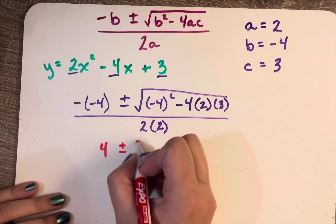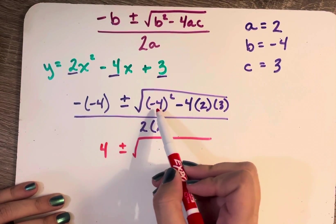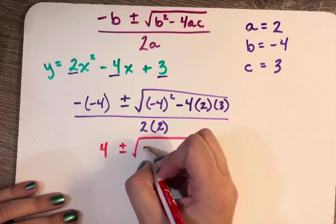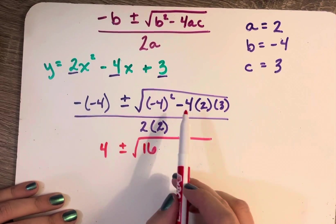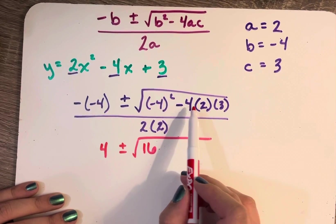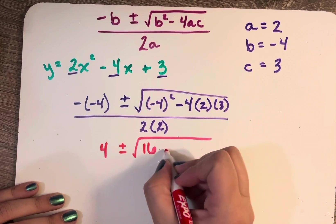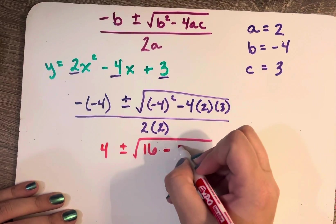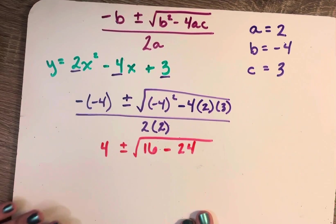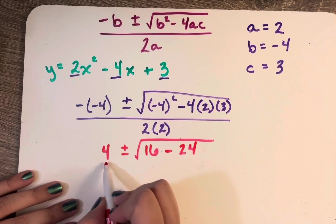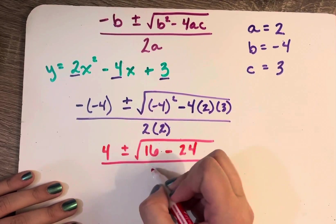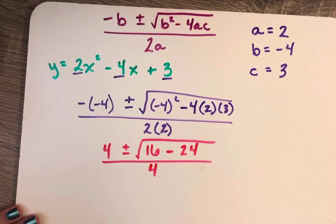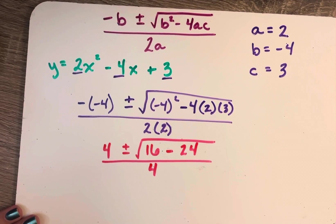This minus negative 4 is going to become a positive 4, plus or minus. Now negative 4 squared is 16, and then minus 4 times 2 times 3. So 4 times 2 is 8, 8 times 3 is 24. And all of that is divided by 2 times 2, which is 4.